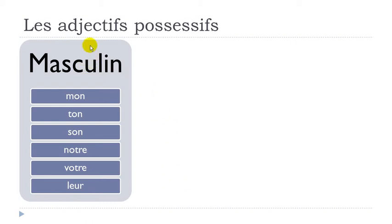So let's be clear — when we talk about these adjectifs possessifs in English it will be: my, your, his, our, your, their. But in French we'll have the difference between the masculine, the feminine, and the plural. Keep in mind that in French we don't decide whether it's masculine, feminine, or plural according to the subject like in English — we put the masculine, feminine, or plural according to the word it is connected to.